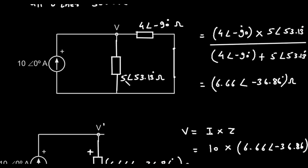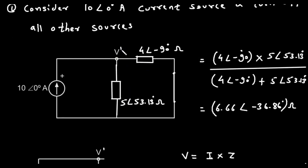To find V', we first need to find the total equivalent impedance of the two parallel branches. The formula for two parallel impedances Z1 and Z2 is Z1 times Z2 divided by Z1 plus Z2. So our equivalent impedance is 4 at an angle of negative 90 degrees, multiplied by 5 at an angle of 53.13 degrees, all divided by the sum of 4 at an angle of negative 90 degrees and 5 at an angle of 53.13 degrees. Let's calculate the numerator first. When multiplying complex numbers in polar form, we multiply their magnitudes and add their angles. Magnitude: 4 times 5 equals 20. Angle: negative 90 degrees plus 53.13 degrees equals negative 36.87 degrees.